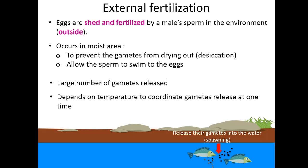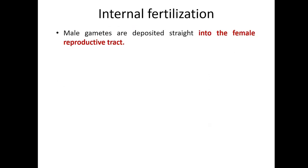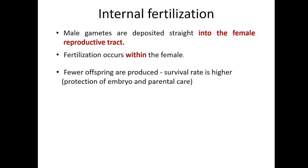The release of reproductive material may be triggered by temperature or the length of daylight. Many fish, amphibians, and other sexual aquatic animals use external fertilization. For internal fertilization, sperm are deposited into the female reproductive tract and fertilization occurs within the tract.